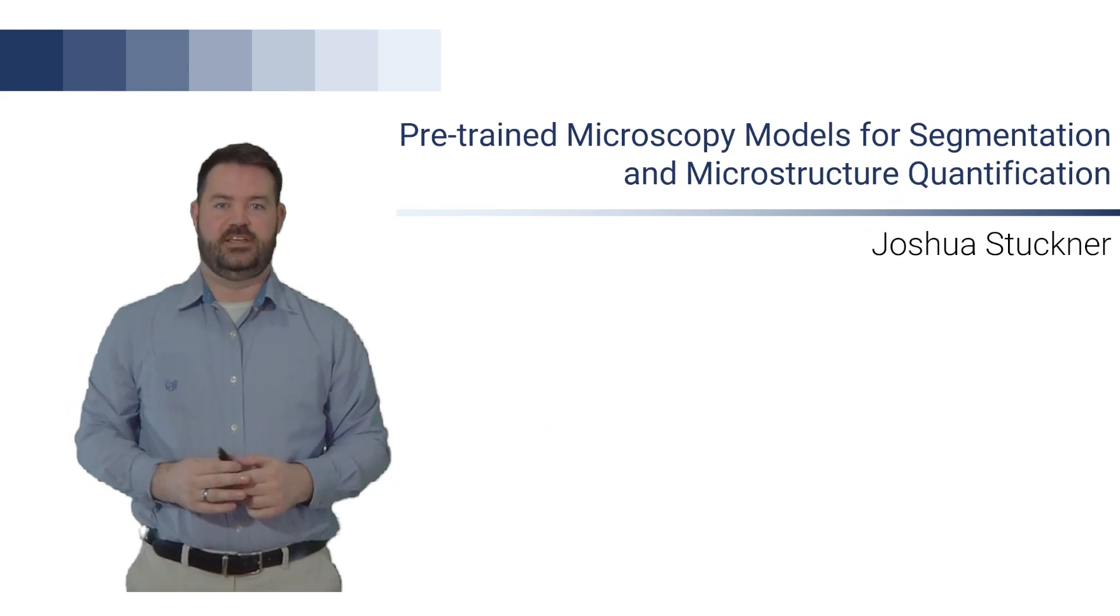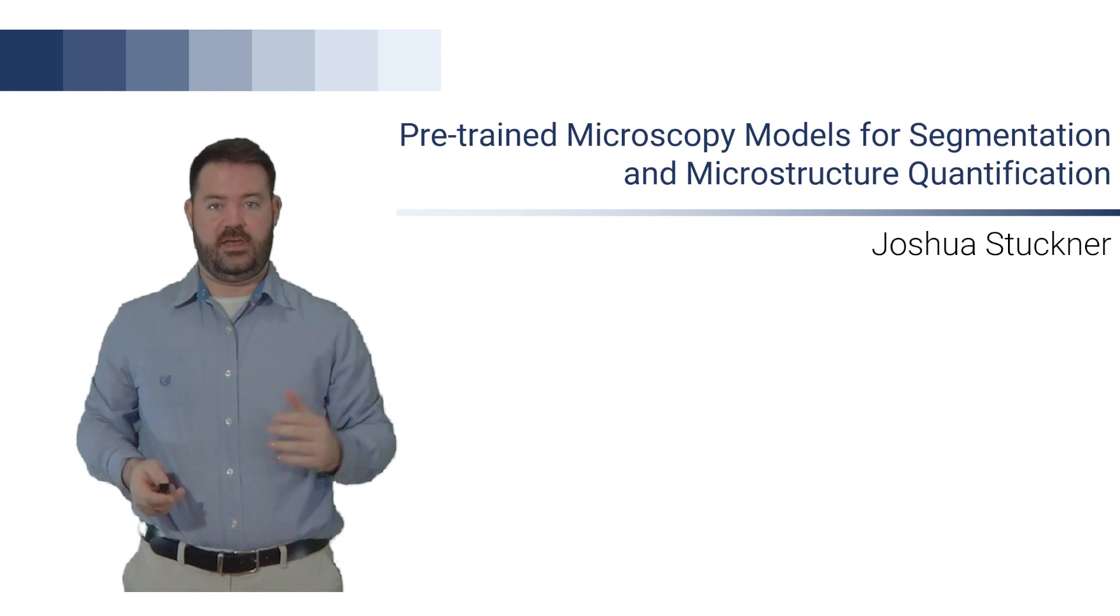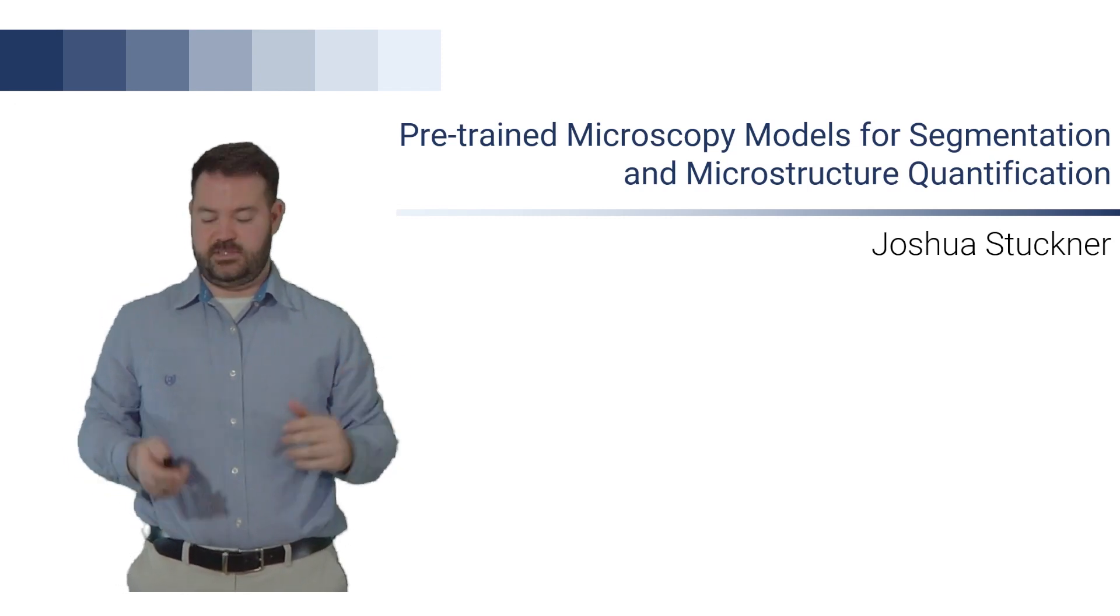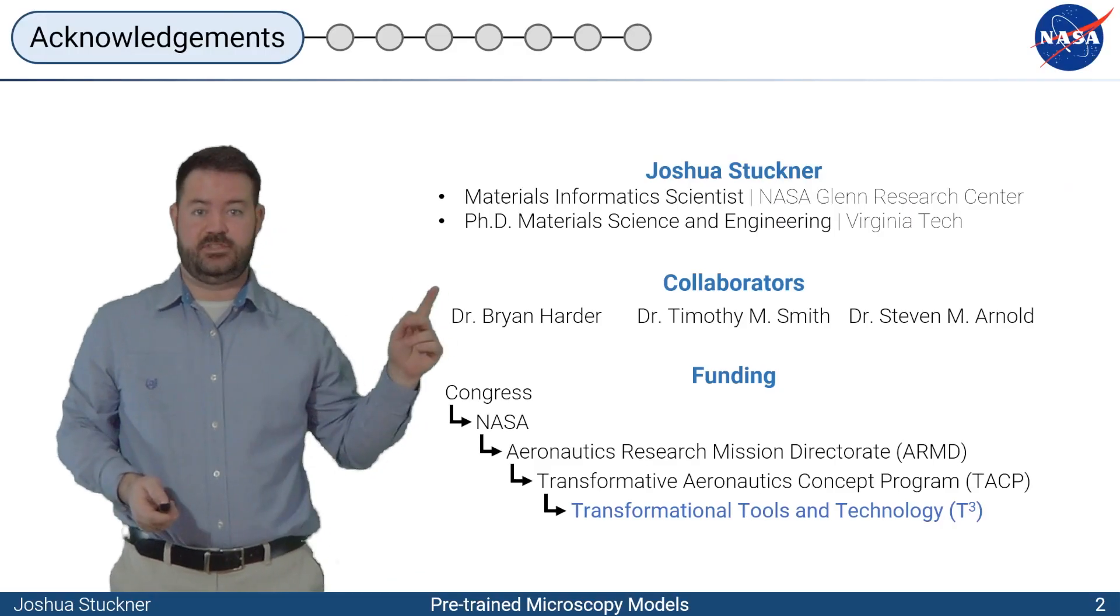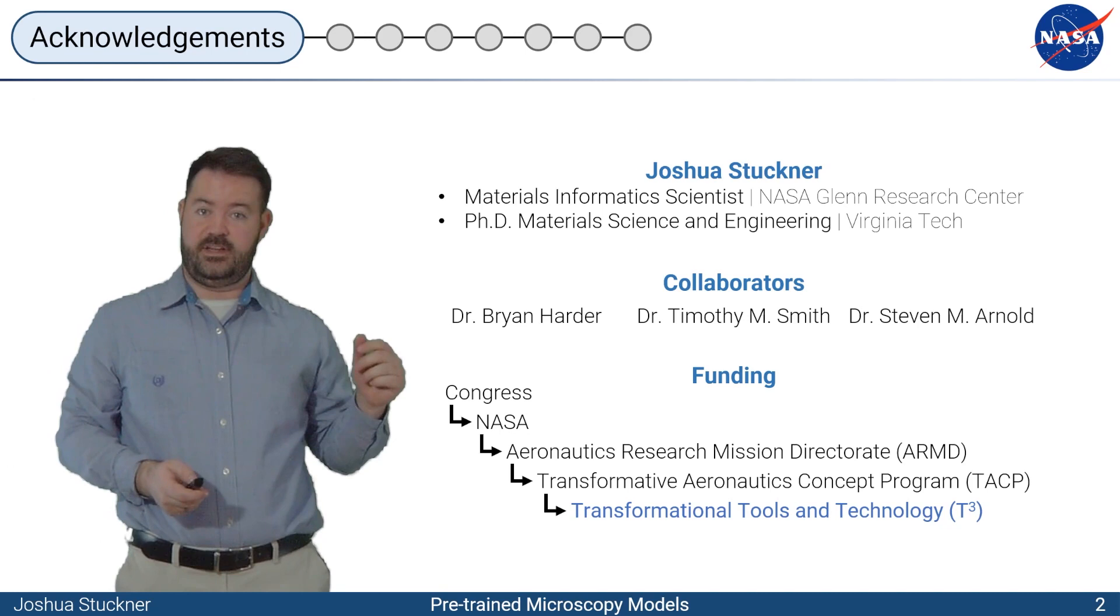Hi, thank you for joining my presentation. Today I'll be talking about how we pre-trained neural network encoders on 100,000 microscopy images and it led to better segmentation and microscopy quantification. My name is Joshua Stuckner. I'm a materials informatics scientist at NASA Glenn Research Center in sunny Cleveland.